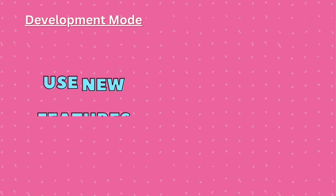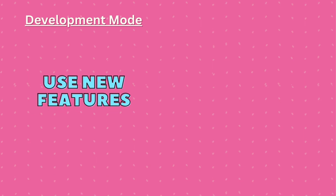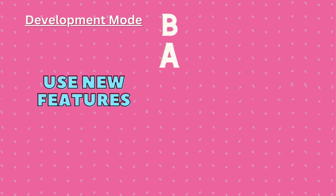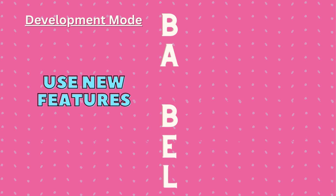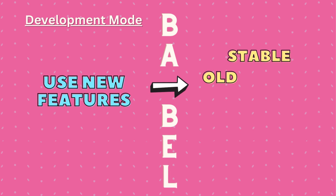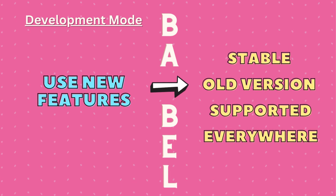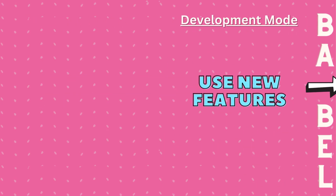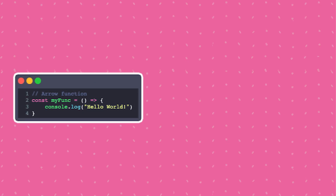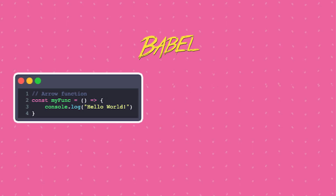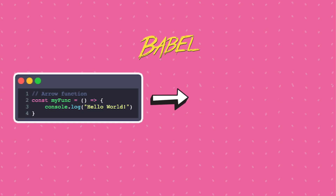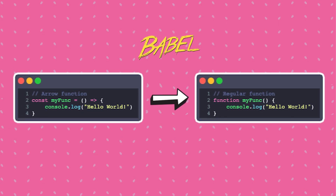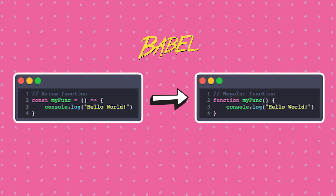Babel was created to address the problem of backward compatibility in JavaScript. So in development, you can use all the latest features, write less code, do more, and then use Babel to compile the code into a version that is supported across all the browsers. For example, if you have used arrow functions in your code, Babel will convert it into a regular function so that an older version of the browser can also understand it.